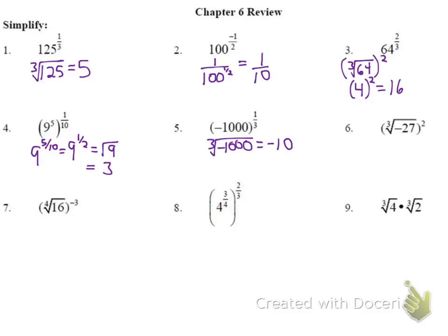Number 6: we need the cube root of negative 27, which is negative 3. We then square that value — negative 3 times negative 3 — which is a positive 9.